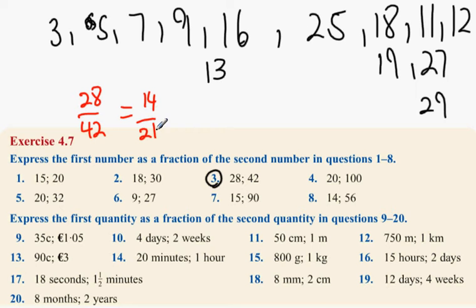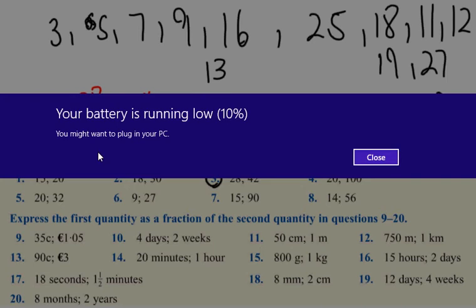14 over 21. Two will no longer divide into them, but seven will. Two over seven. Divide the top and bottom by seven. Sorry, two over three, because when seven divides into 21, it goes three times. Two over three, because it divides by seven.